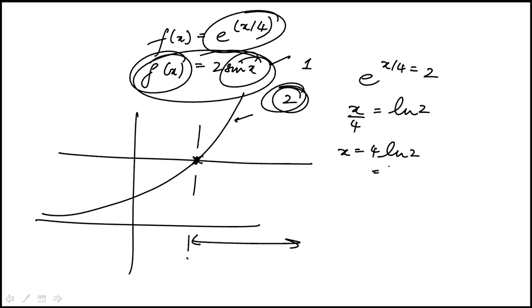So as long as x is greater than 2.77, the function f would be greater. So the answer is choice c.